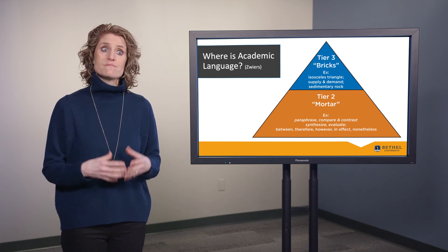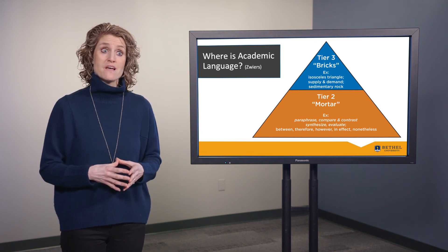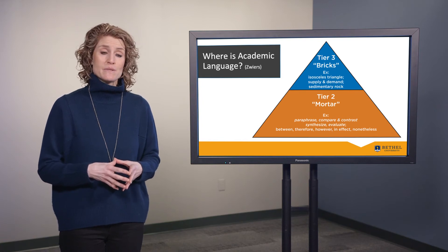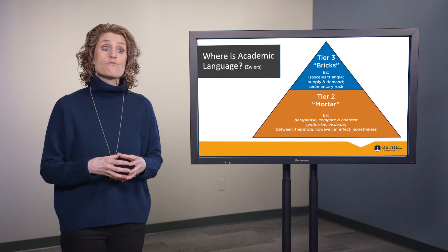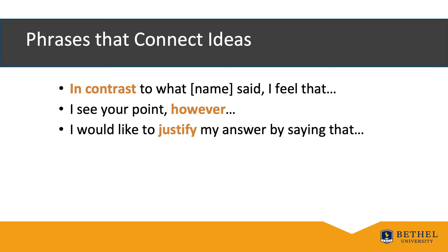In an effort to focus on the mortar — the Tier 2 words — I would encourage you to post a Bloom's Taxonomy poster in your room for you and your students to reference. Incorporate specific Tier 2 phrases into your lesson plans and provide specific sentence stems and transition words for your oral and written activities. For example, during any classroom discussion, we can teach students to use Tier 2 connective phrases as they agree and disagree — phrases such as 'In contrast to what so-and-so said, I feel that...', 'I see your point, however...', 'I would like to justify my answer by saying that...', and 'In spite of the positives of... a key aspect to this subject is...' Teaching and practicing these kinds of polite conversation starters will also help your students hone their social skills.